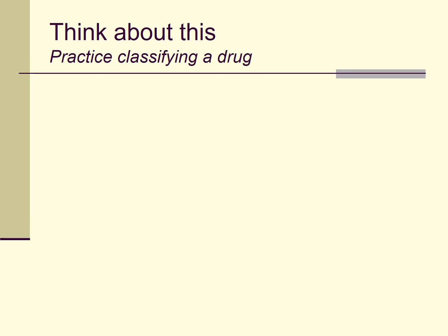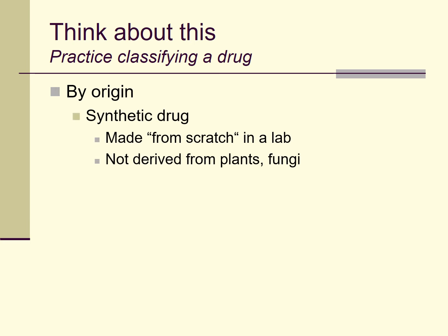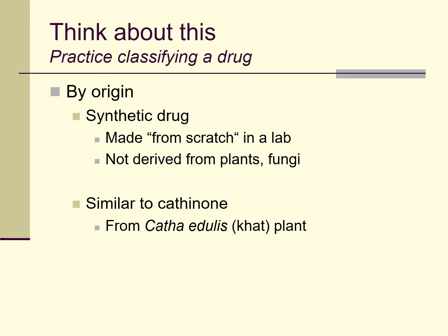One thing we could do is classify the drug by origin. Where does it come from? Well, it's a synthetic drug — made from scratch in a laboratory from chemical reagents that a chemist could purchase. It's not derived from a specific plant, fungi, or other natural source. It happens to be similar to cathinone, a naturally occurring chemical derived from the khat plant. So we could call this new drug a synthetic cathinone, and in fact it is sometimes classified that way.